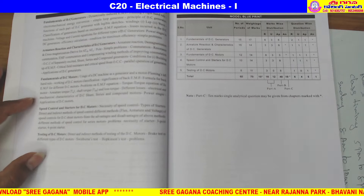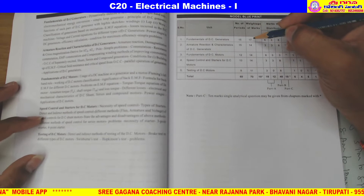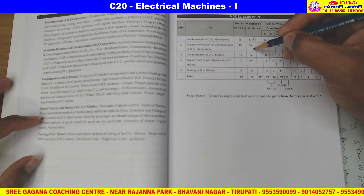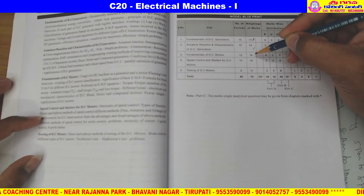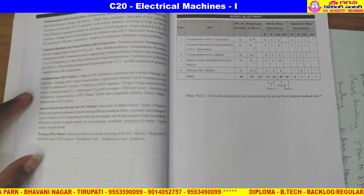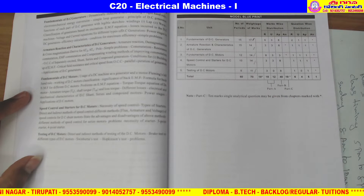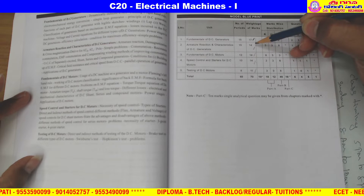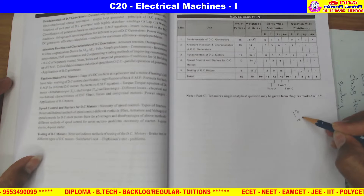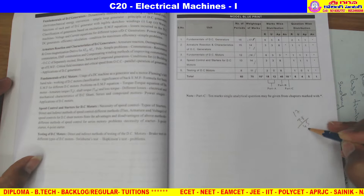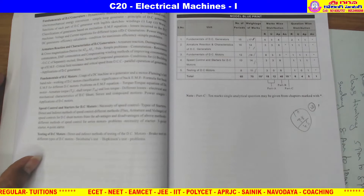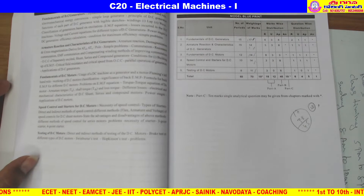Before going into that, this is the fundamentals of DC generators — 17 marks. Fundamentals of DC generators is 14 marks, speed control and testing of DC motors. Overall, fundamentals of DC generators and armature reactions: the first three units — 17 plus 28 — means you can score 45 marks. If you study the first three units, you will be able to pass.